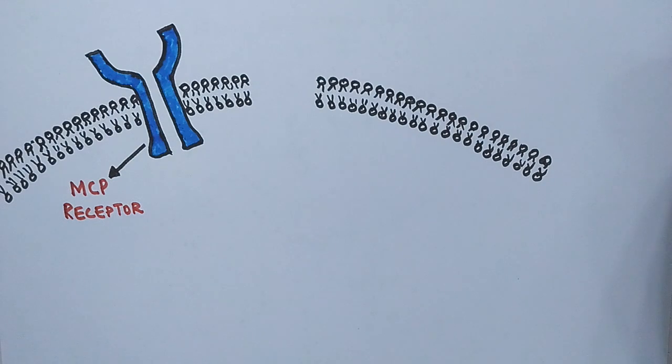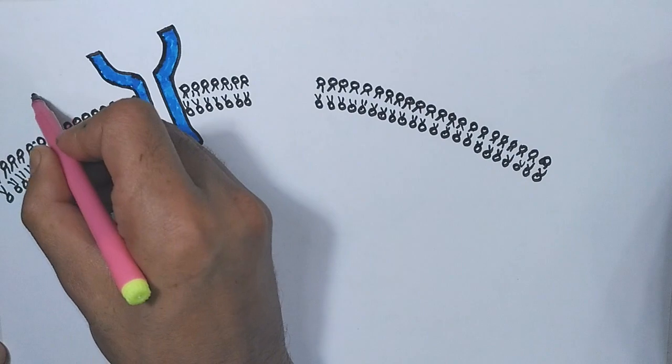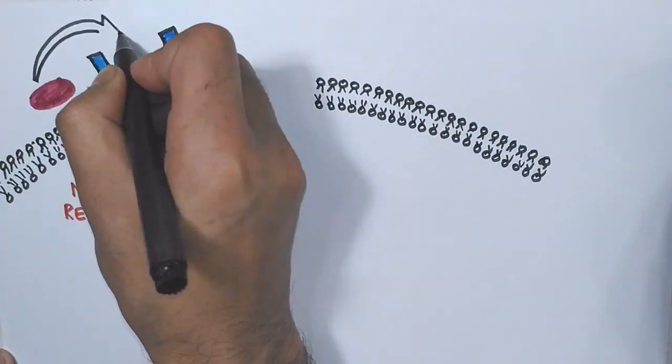It's a receptor protein which is able to detect the repellents and attractants in the environment. Prior to ligand binding, the receptor is in the form of monomers. When there is any substance, say a repellent near the bacteria, the repellent acts as a ligand for the MCP receptor.